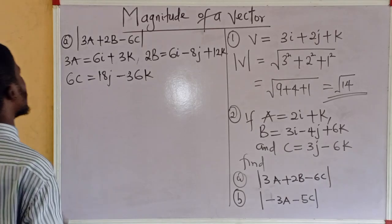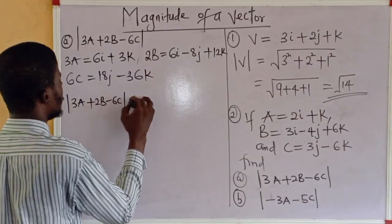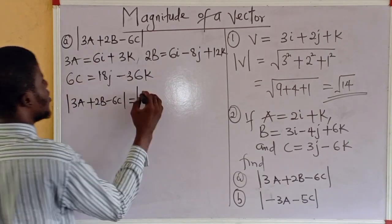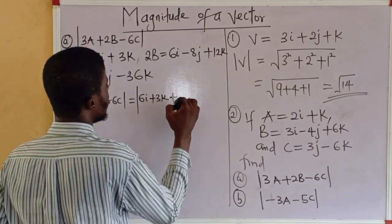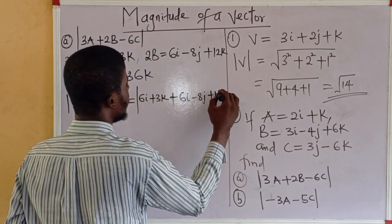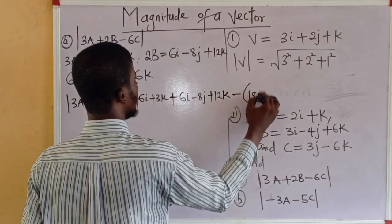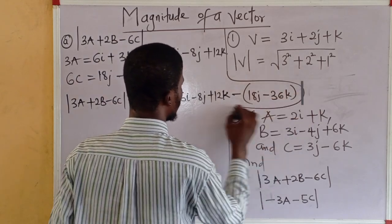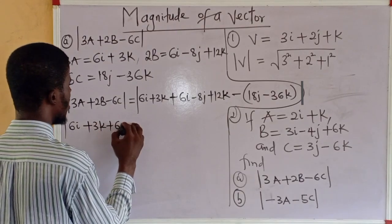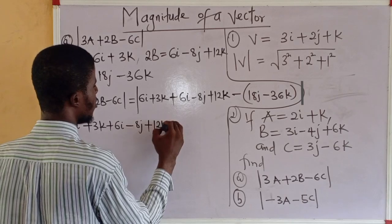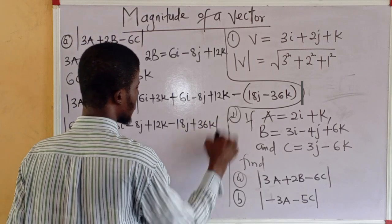So, this is it now. The modulus of 3a + 2b - 6c. What's 3a? 6i + 3k, plus 6i - 8j + 12k, then minus 18j - 36k. So we have the modulus of 6i + 3k + 6i - 8j + 12k. The minus we enter that bracket, we have minus 18j plus 36k.